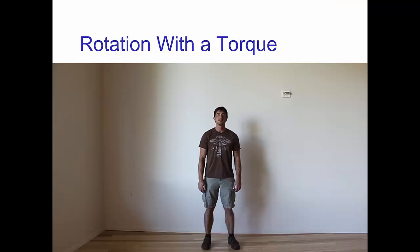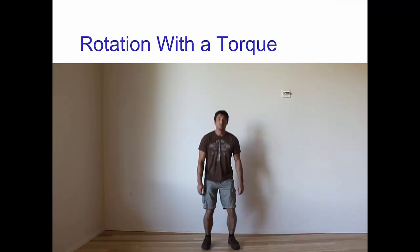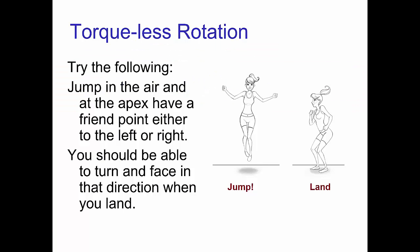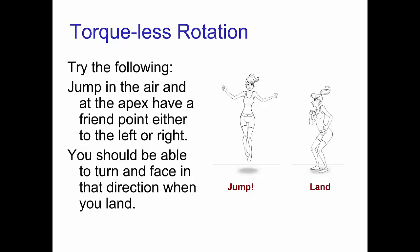Here we see Rick doing a twist in which he starts facing camera and lands facing screen left. Now try the following: jump in the air and at the apex, have a friend randomly point either to the left or to the right. You should be able to turn and be facing in that direction when you land.